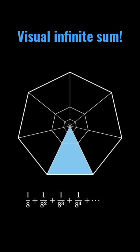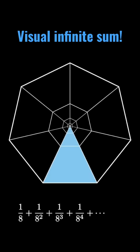If we do this forever, we see that this shaded region now has an area represented by the sum of the powers of 1/8th.